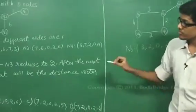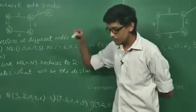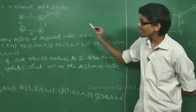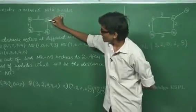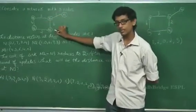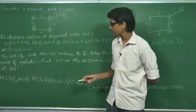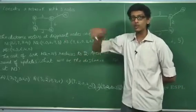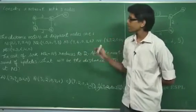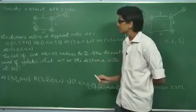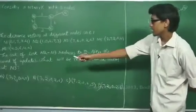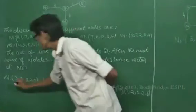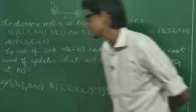If this change was made between two rounds of updates, only the values at N2 and N4 — the neighbors of N3 — would have changed. But after the next round of updates, everything would have been shared and the distance vector updated. So the correct option is Option A: [3, 2, 0, 2, 5].